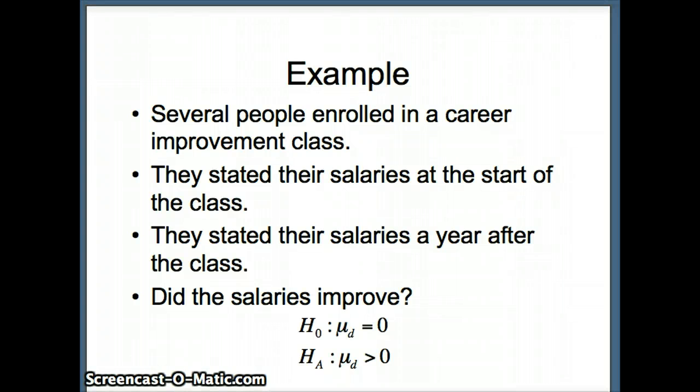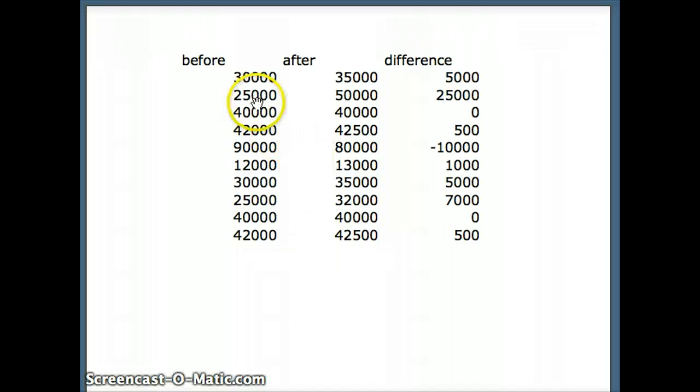So I'll show you the data. So before 30,000, after 35,000, that person improved 5,000. Here before 25,000, after 50,000, that person improved 25,000. Dramatic improvement. Was it due to the course or to something else? Maybe a change in the economy. This poor guy went down 10,000. So what does this tell us? Could we say that this was effective?